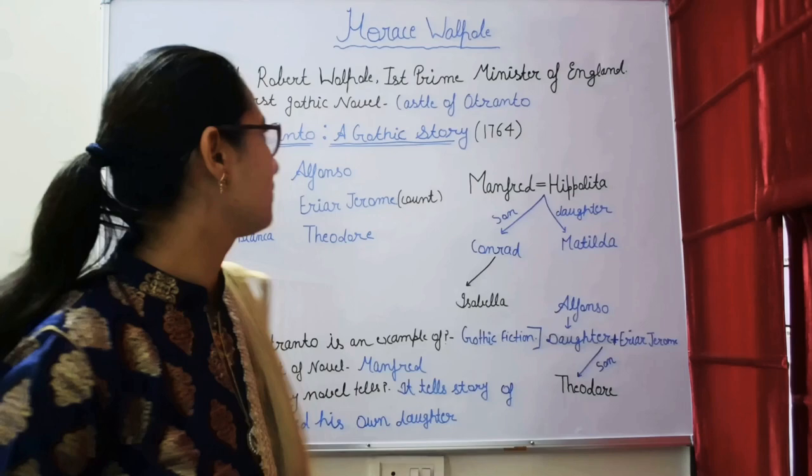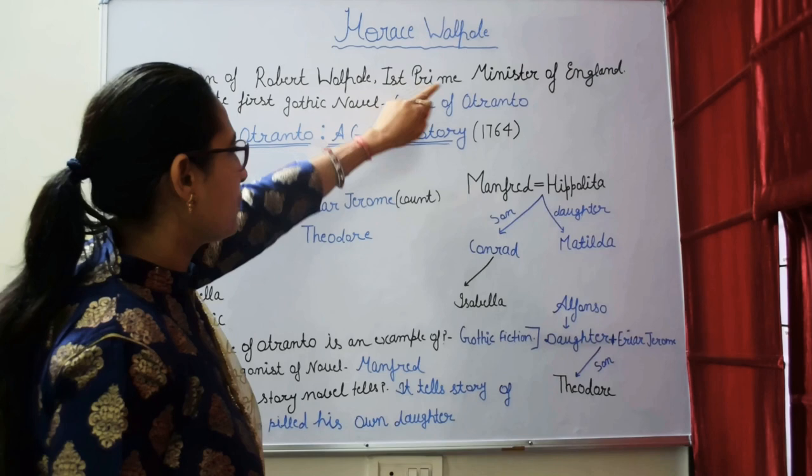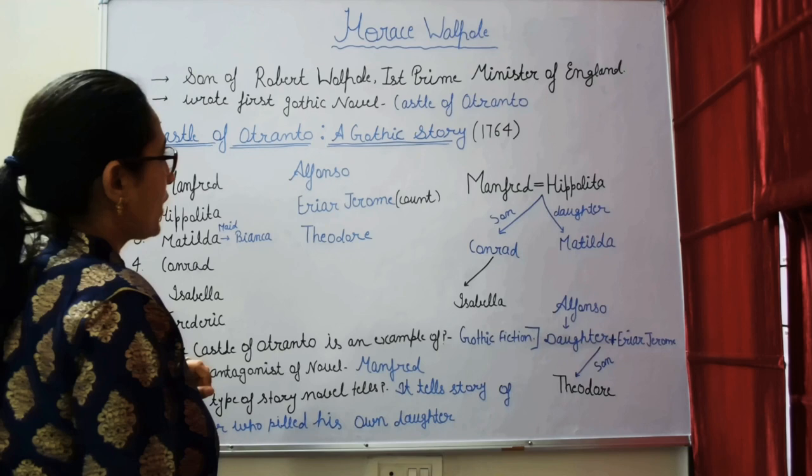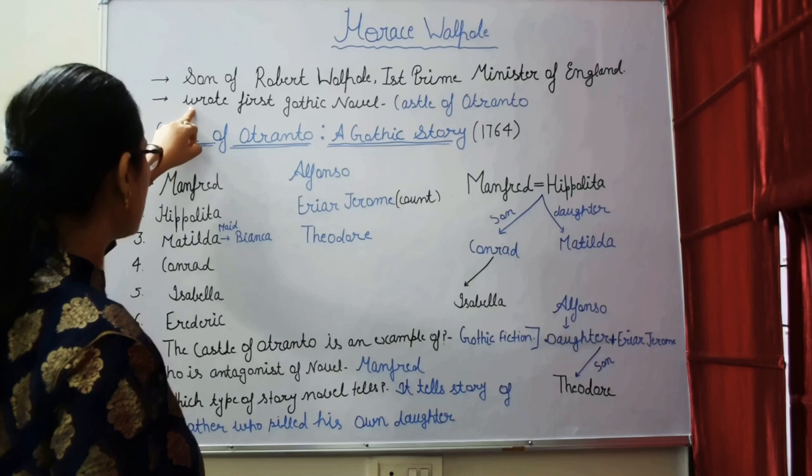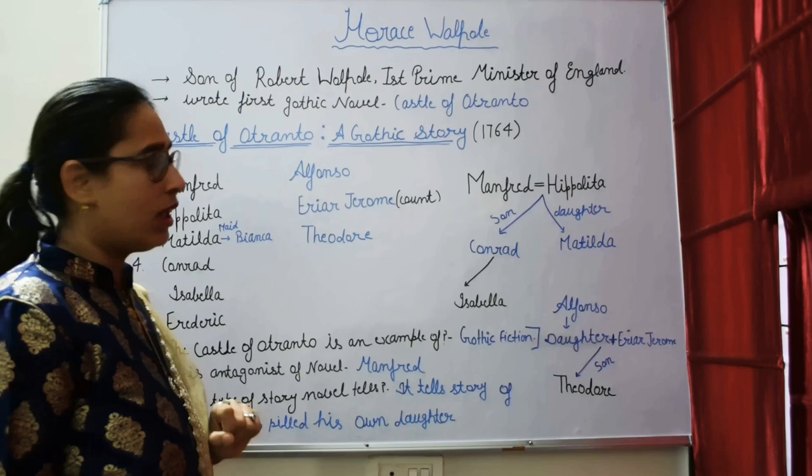Horace Walpole was the son of Robert Walpole, England's first Prime Minister. Horace Walpole wrote the first Gothic novel, Castle of Otranto.